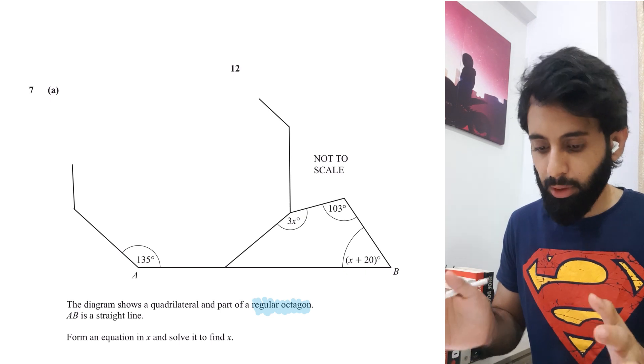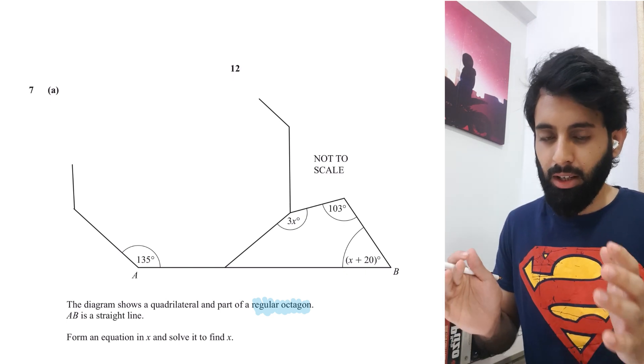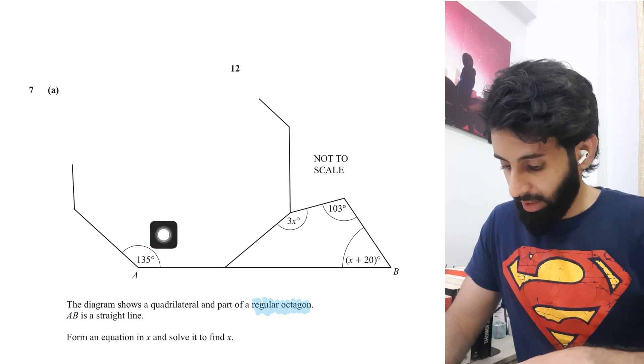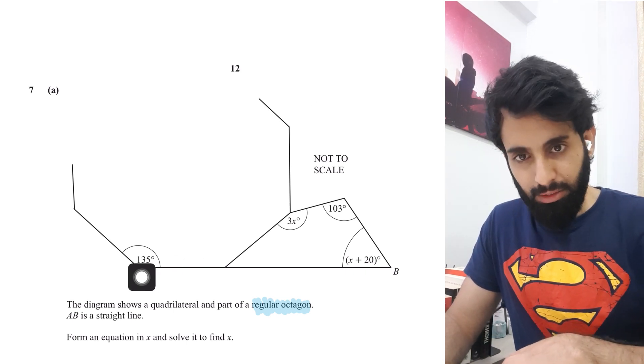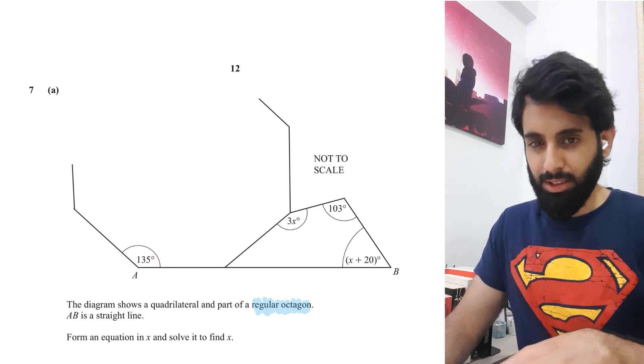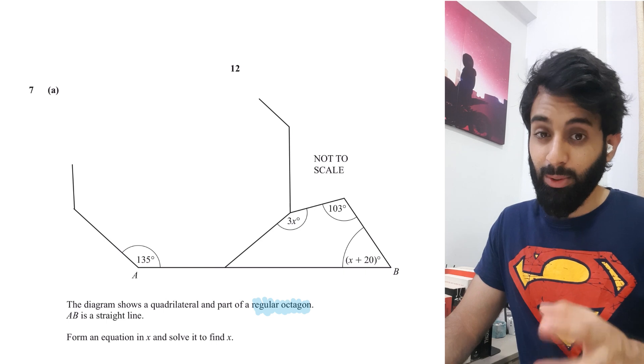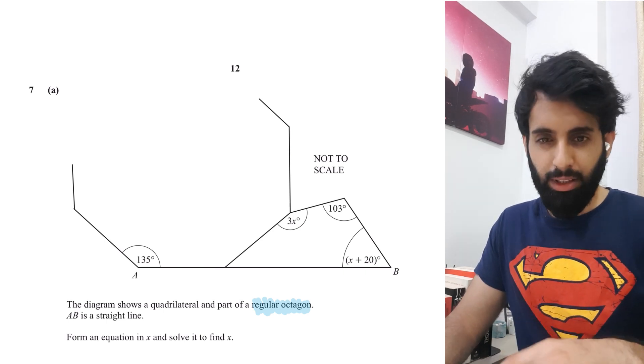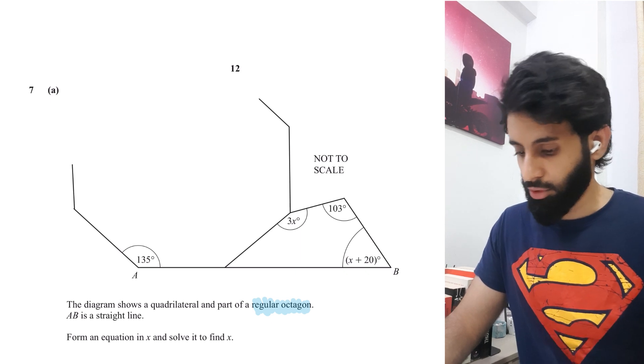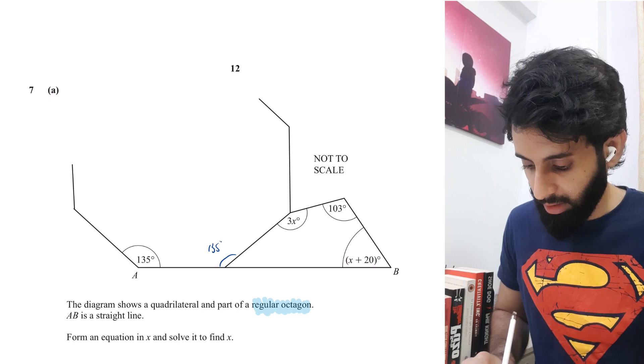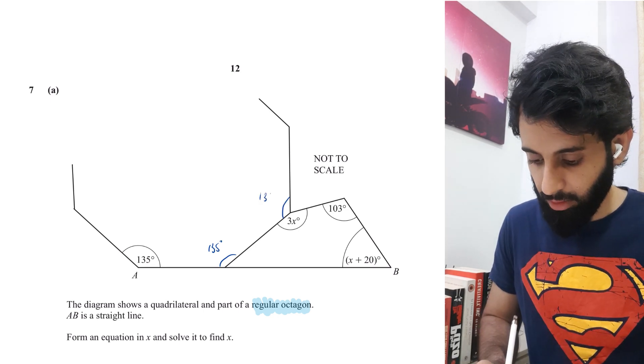You should have your formulas for polygons revised - they should be at your fingertips by now. The question has given us 135, but even if it hadn't, we could work it out ourselves. We know this is a regular octagon, so the formula for each interior angle is (n-2)×180÷n. I have an introductory video you should check out. This means all the other angles are also 135.